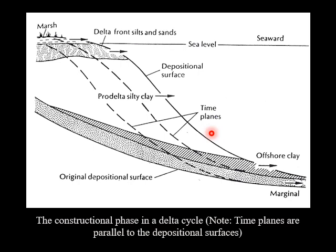In the constructional phase of a delta cycle, as river water flows into the sea it slows down. First, sand drops from suspension in the delta plain. Then silt and clay settle into the delta front. Finally, clay settles in the pro-delta. As the delta grows outwards or seawards, the sandy shallow-water sediments build over the fine-grained sediments deposited in deep waters. Note that time planes are parallel to the depositional surfaces.